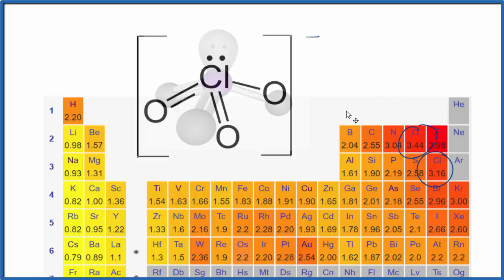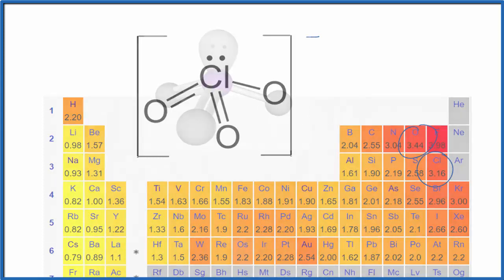So in answer to our question, the chlorate ion is polar because it's not symmetrical and we have a difference in electronegativity. This is Dr. B. Thanks for watching.